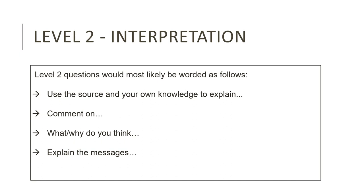Just like a Level 1 question, once we learn how to recognize a Level 2 question, they become very easy to answer because then we know we have to interpret the information given. We first have to learn how to identify a Level 2 question. When reading a Level 2 question, look out for specific words used only in Level 2 questions. These are words like 'explain' — if you see the word 'explain,' you know automatically it's a Level 2 question. Sometimes the question will start with 'use the source and your own knowledge to explain,' but because the word 'explain' is there, you know it's Level 2.